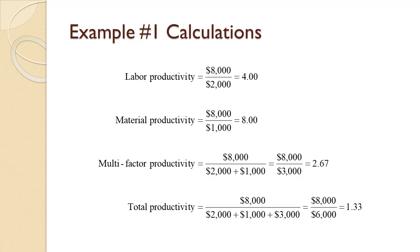Finally, for total productivity, we add all the costs together and get $2,000 labor plus $1,000 material plus $3,000 overhead for a total cost of $6,000. This makes total productivity of $8,000 divided by $6,000 equals 1.33.